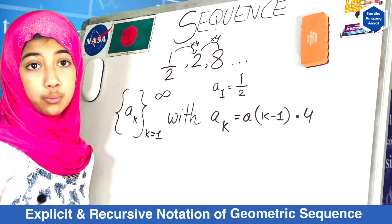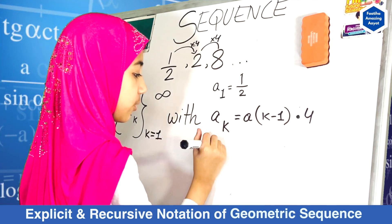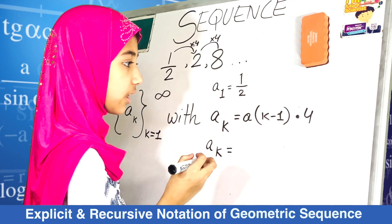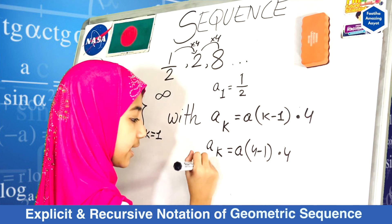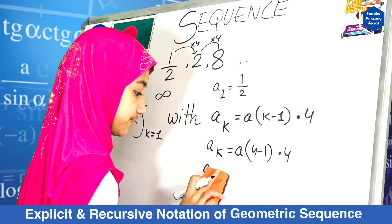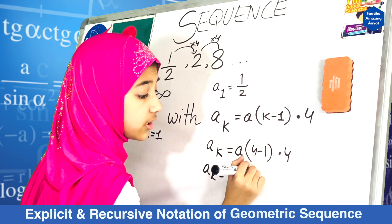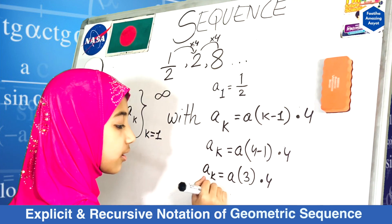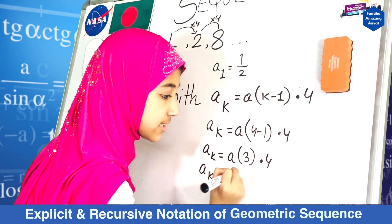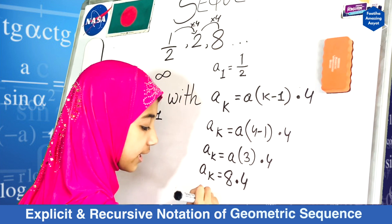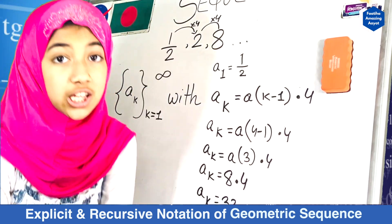Now let's test it out. Let's say we want to figure out the fourth one — we already know that's 32, and it works with the explicit. So A sub k is equals to A sub 4 minus 1 times 4. A sub k is equals to A of 3 times 4. Now A of 3 is 8, so 8 times 4 gives A sub k is equals to 32. So dear viewers, it works with both the explicit and the recursive.